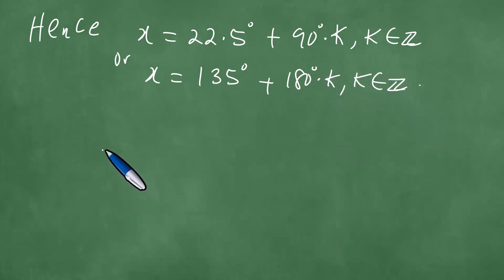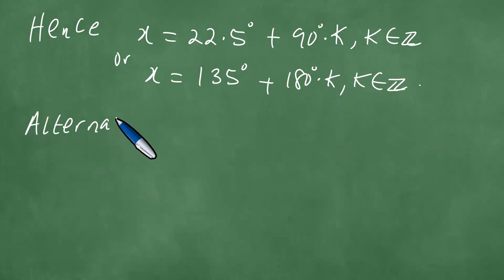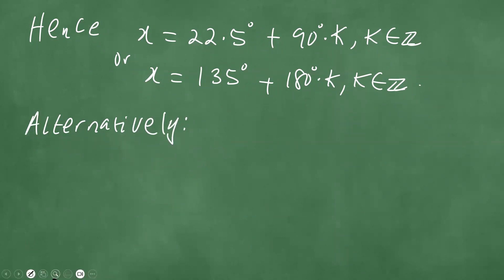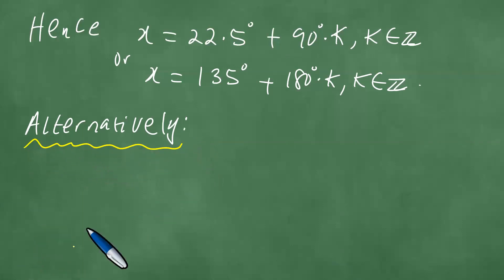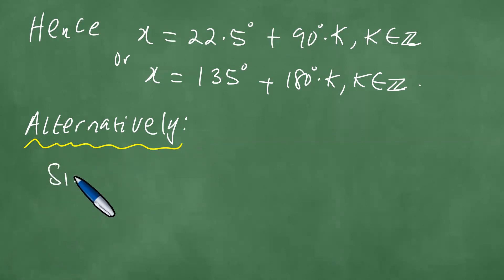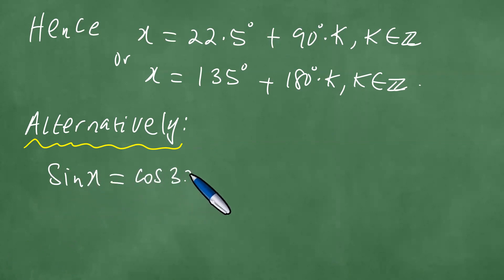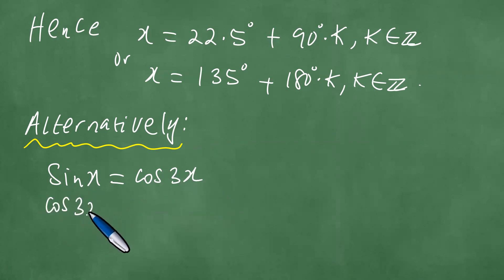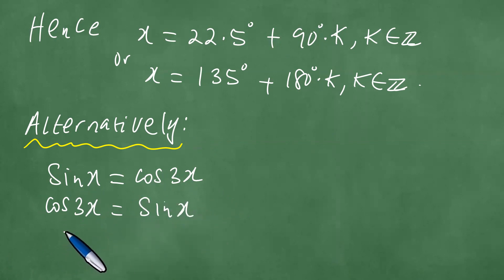That is what we get. Alternatively, there is another way of doing the problem. Another student can approach this in a slightly different fashion: one would look at the fact that sine of x equals cosine of 3x, and start by writing cosine 3x equated to sine of x by symmetry of the equality.